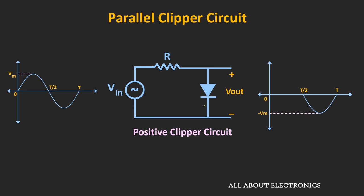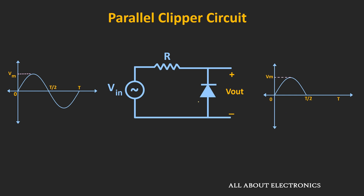Similarly, just by reversing the direction of the diode, it is possible to design the negative clipper circuit. During the positive half cycle, this diode will act as an open circuit and the output will follow the input signal. During the negative half cycle, this diode will get turned on, act as a short circuit, and the output will be equal to zero. Now, if this diode is non-ideal, the actual waveform will look different — whenever the input voltage goes below minus 0.7V, this diode will get turned on, and the voltage across the diode will be equal to 0.7V, so the output will be clamped at minus 0.7V.